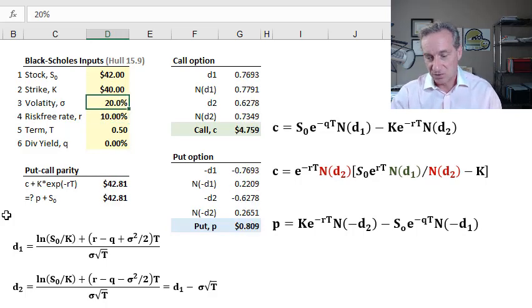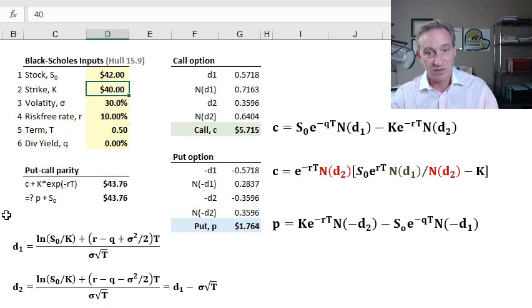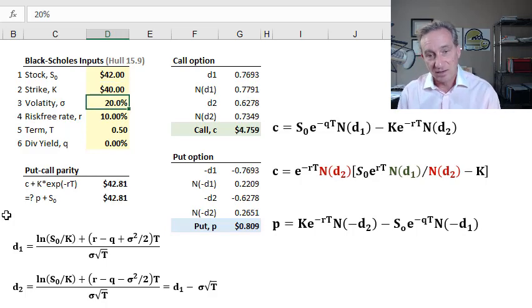If I just change the volatility, for example, to 30%, you'll see they match. Put-call parity applies. My formula is correct.